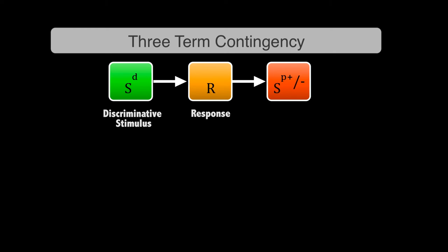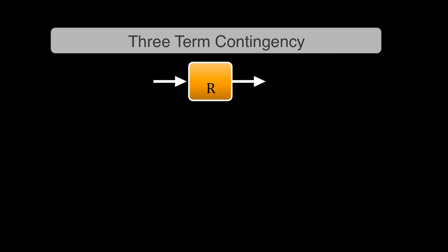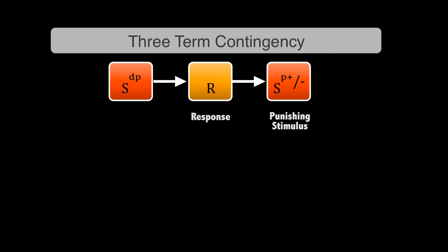But let's move back to the first term because there's some variations on the SD that we want to talk about. An SD signals to the organism that a reinforcer is available in that context at that time for a particular response. That's what the SD signals. So the SD is about signaling a reinforcer.